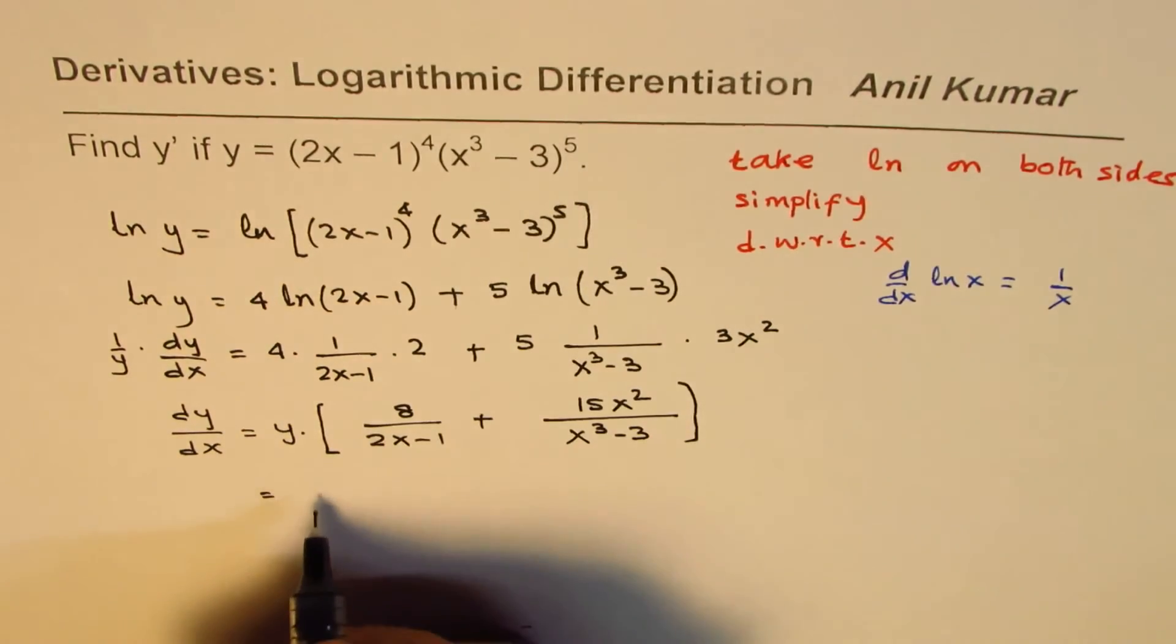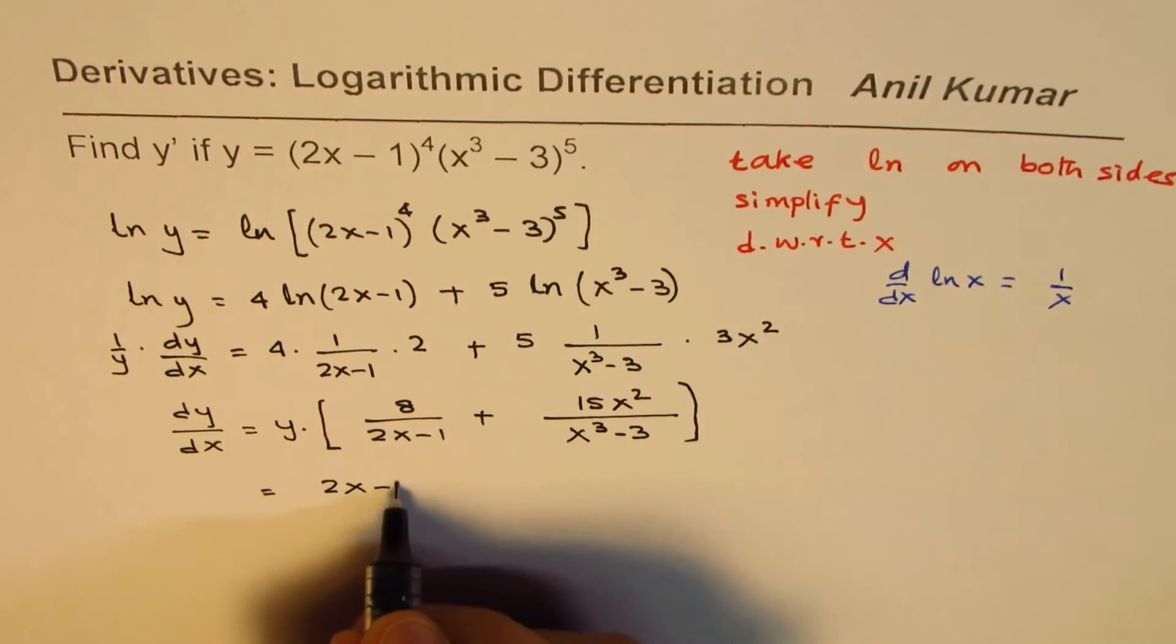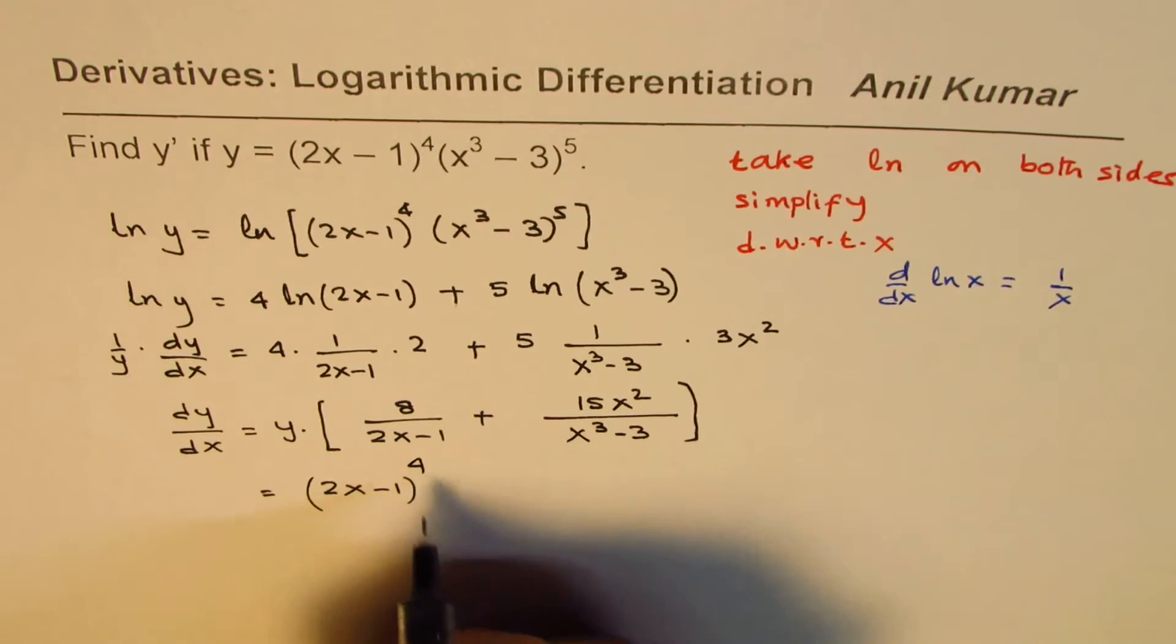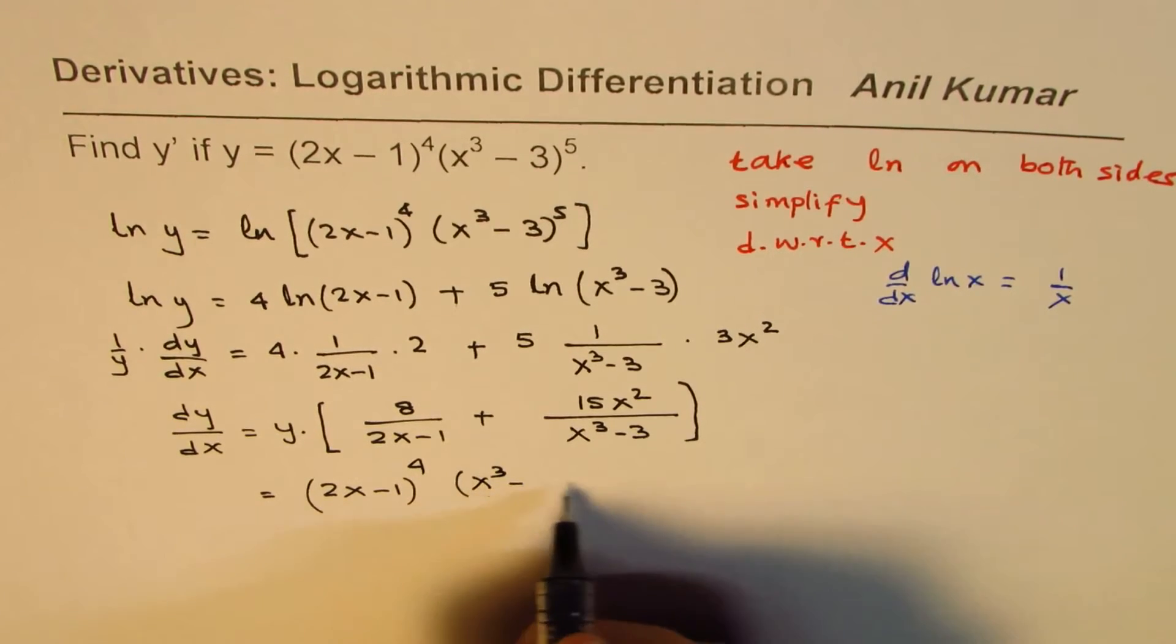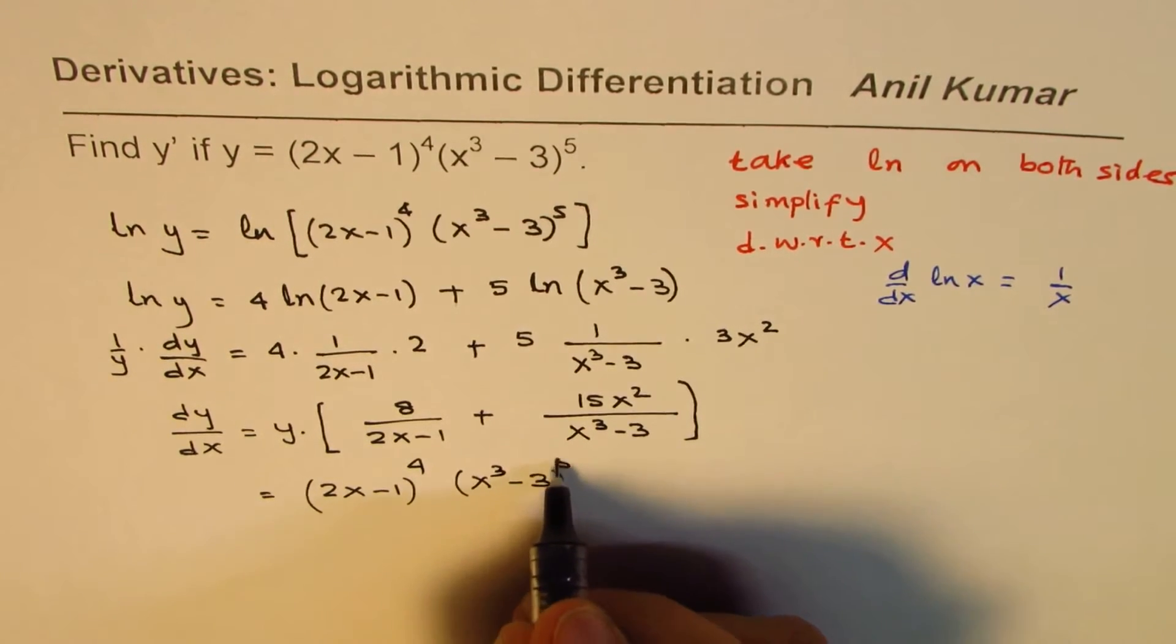Now, you can replace y with the original function, which is (2x - 1)^4 times (x^3 - 3)^5.